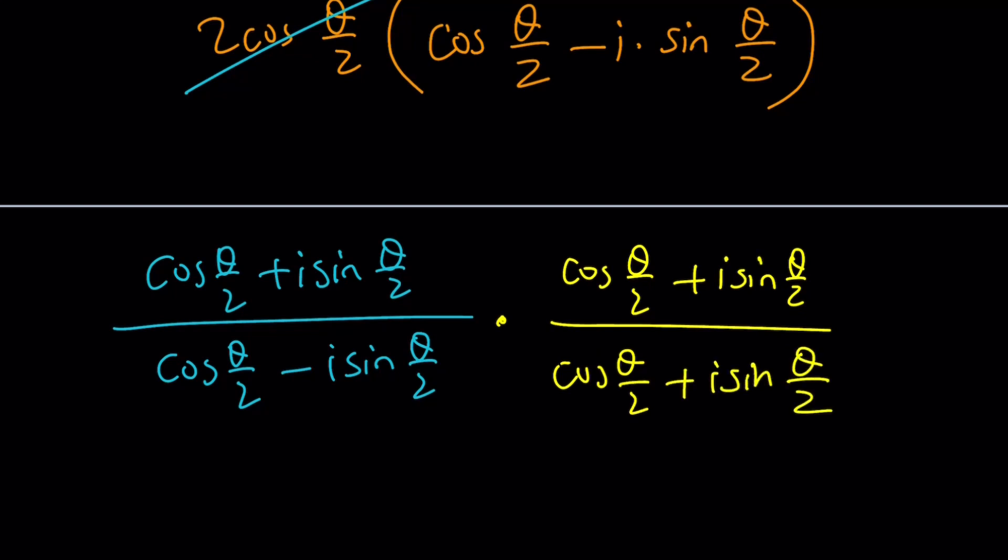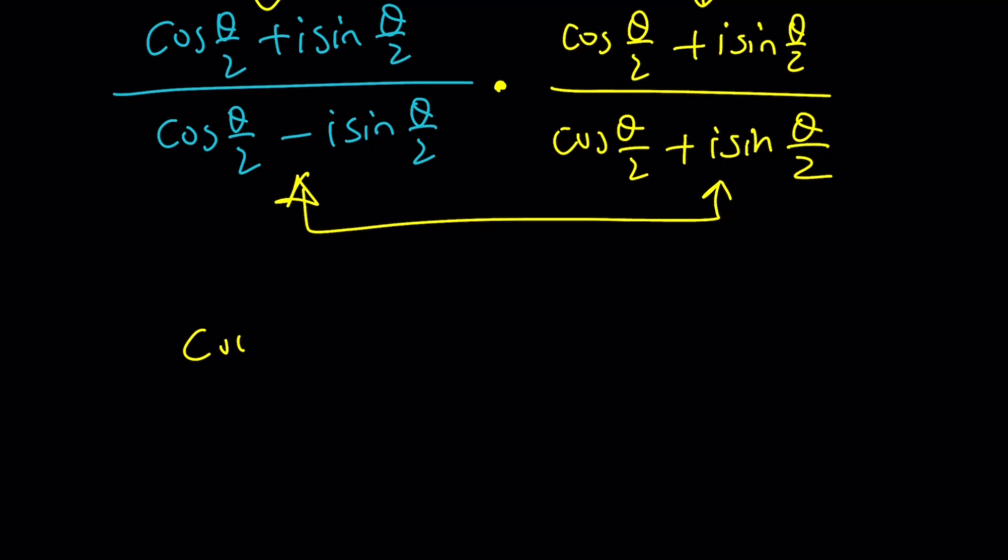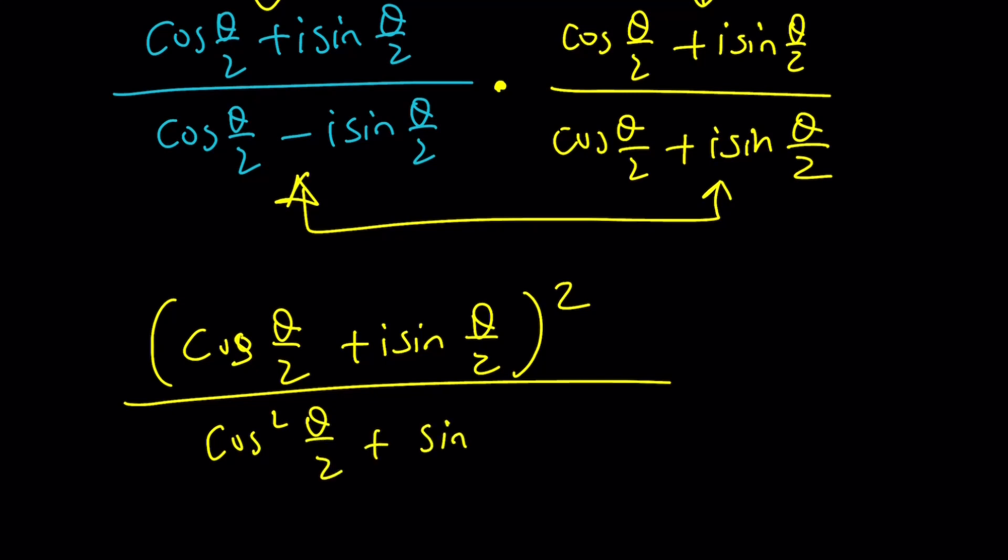And of course, their product is going to be the sum of two squares, a squared plus b squared. And this is just going to be a perfect square. So let's go ahead and square cosine theta over 2 plus i sine theta over 2 in the numerator. And denominator is just going to be cosine squared theta over 2 plus sine squared theta over 2.